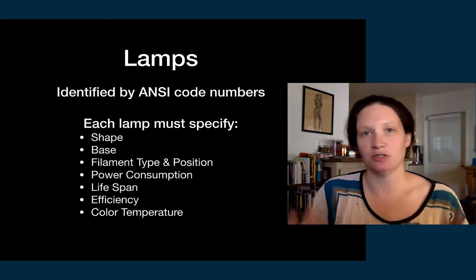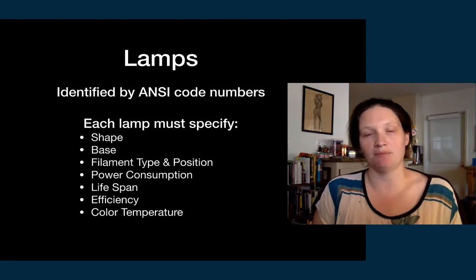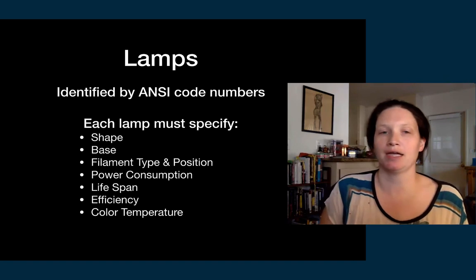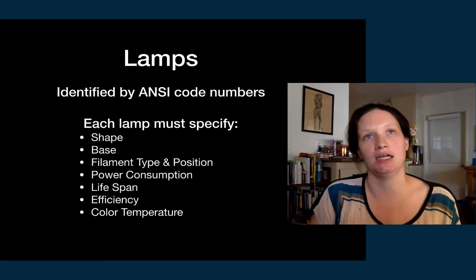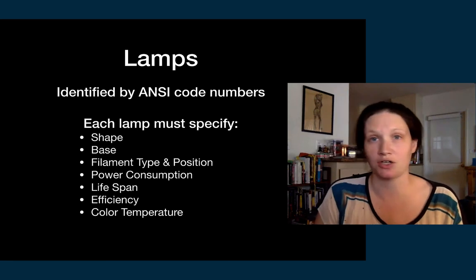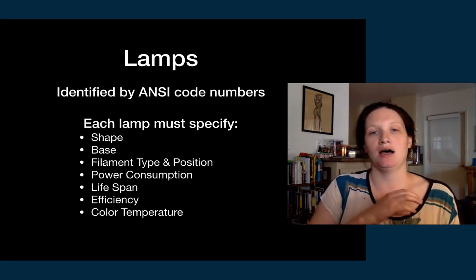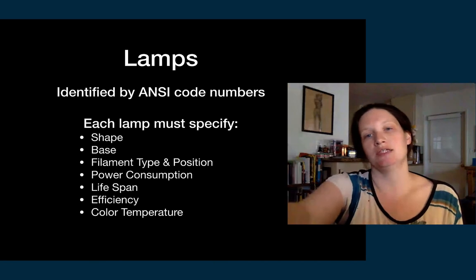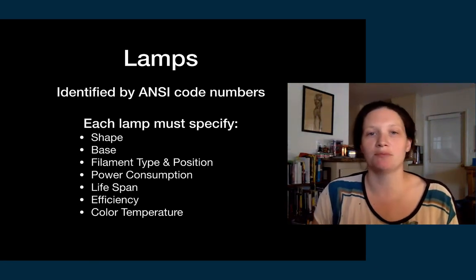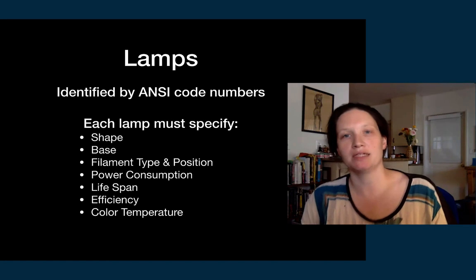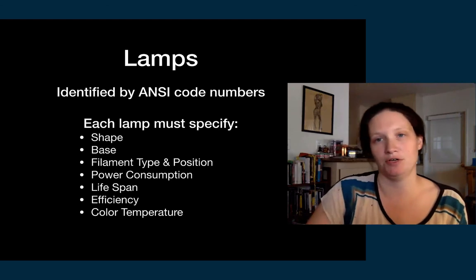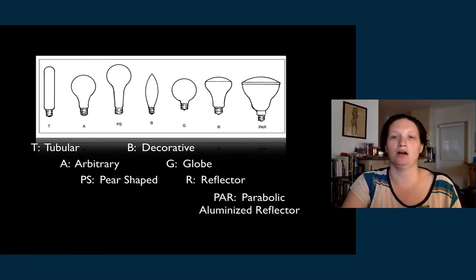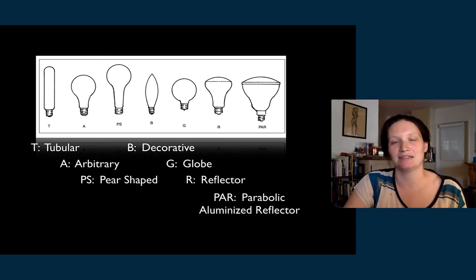When we talk about lamps, every theatrical lamp is identified by an ANSI code number — like HPL or FLK. That number doesn't abbreviate anything specific; it's just a three-letter code representing data about the lamp: the shape, the base type, the filament type, power consumption, lifespan, efficiency — all of that is embedded in that code.